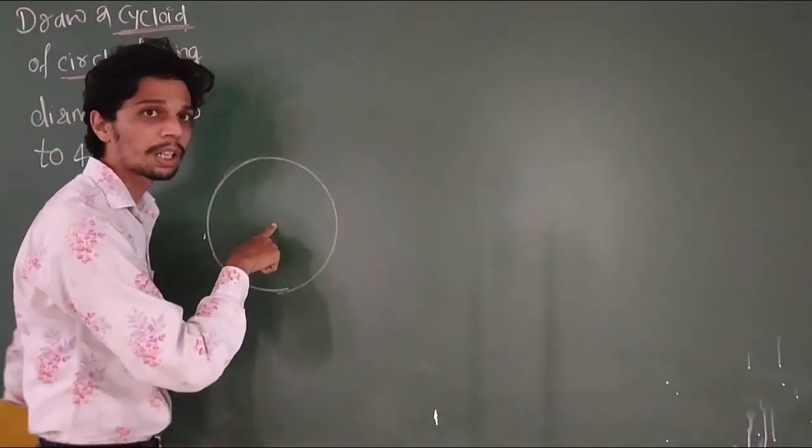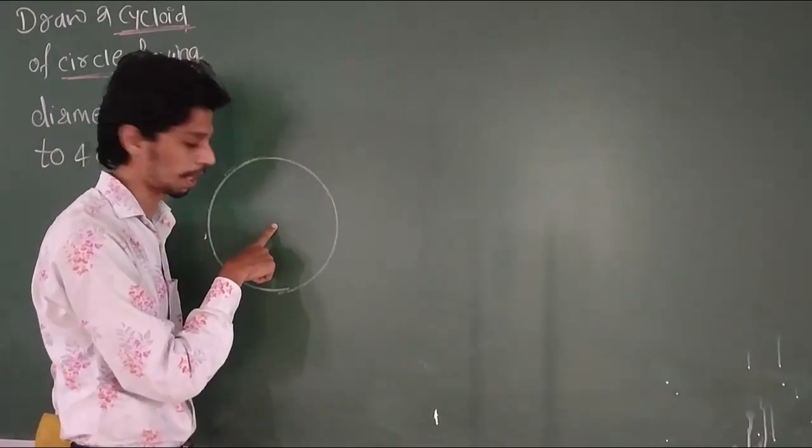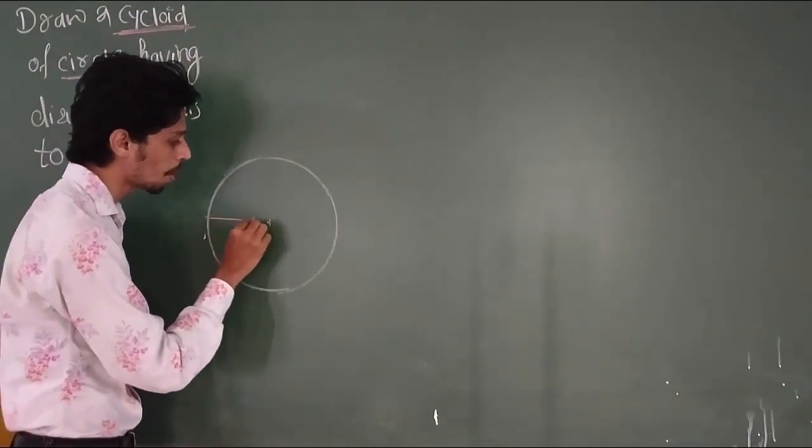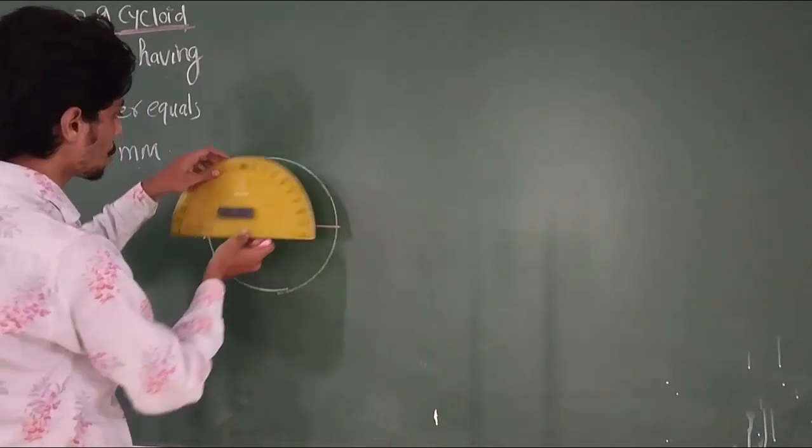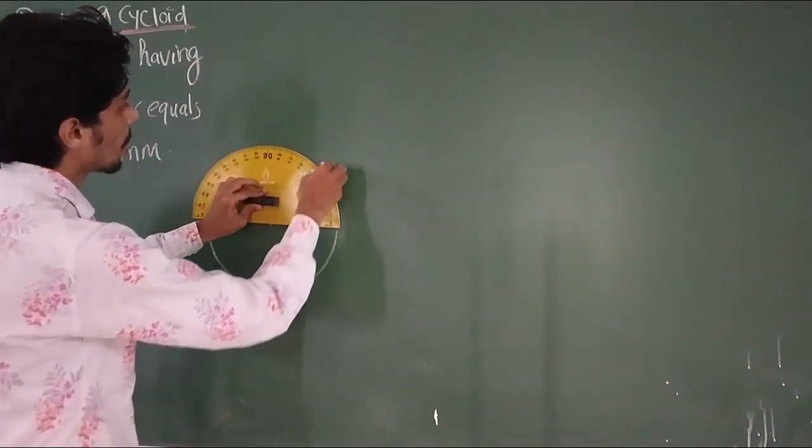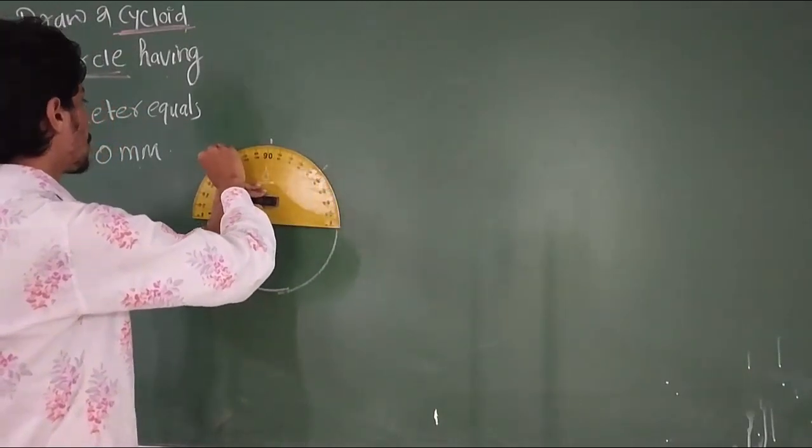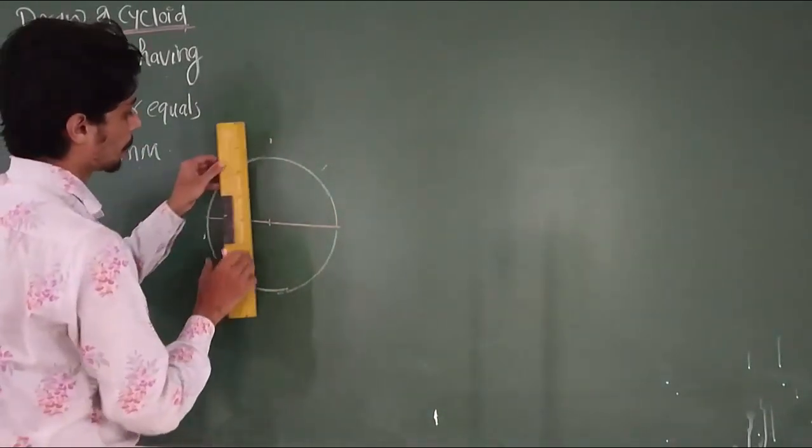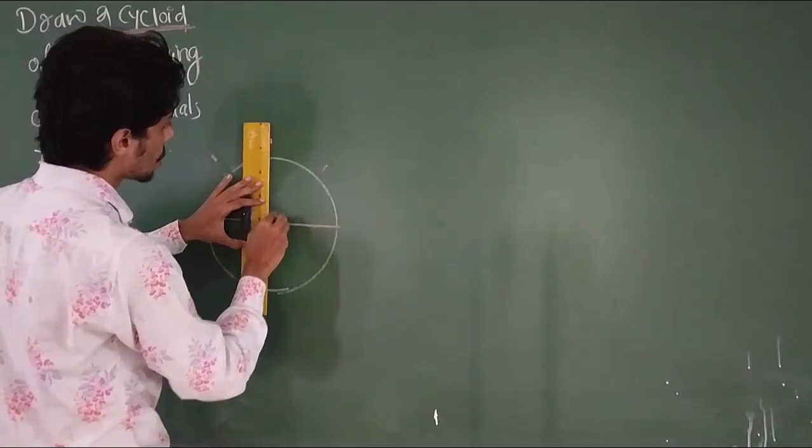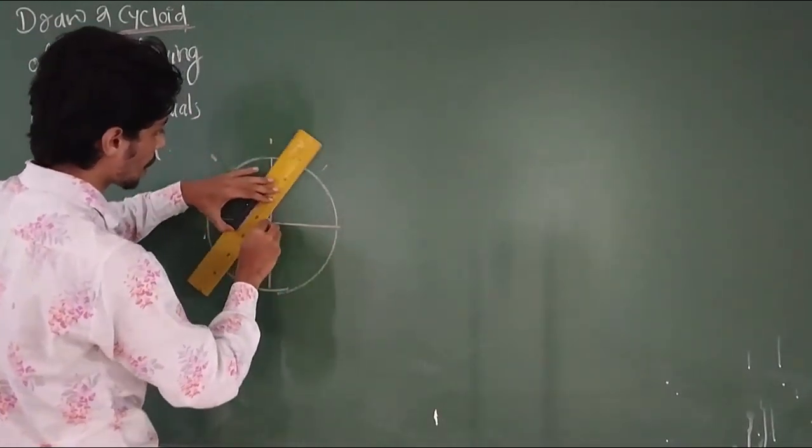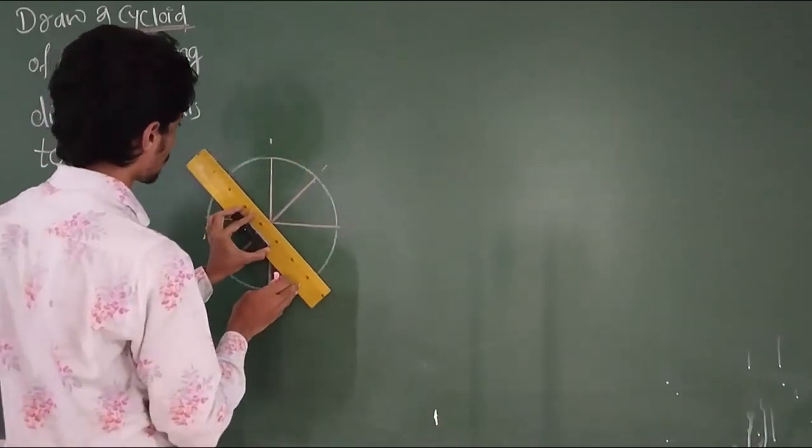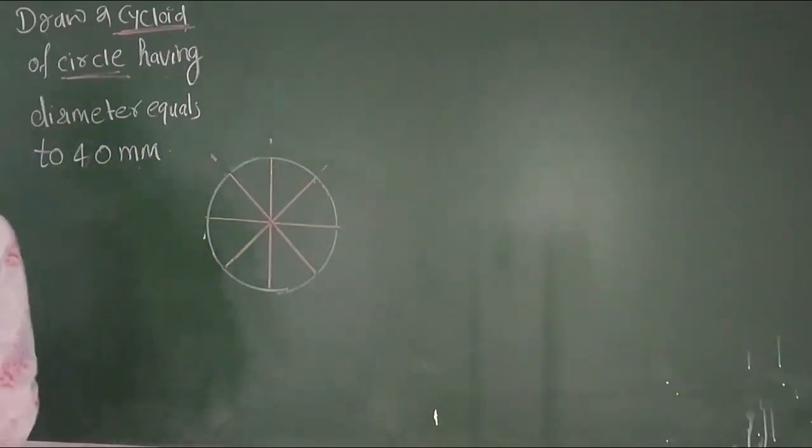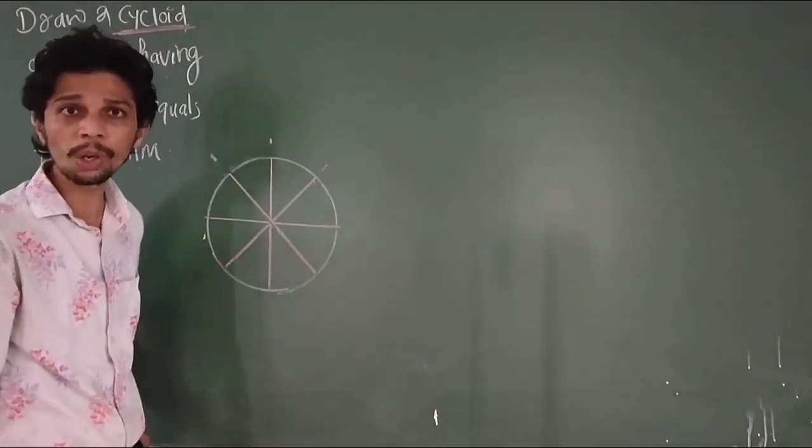Now, what do we do? This circle, we divide it into 8 equal parts. How do we divide? First of all, we draw vertical and horizontal center lines through the circle center. This will give us 4 parts initially.